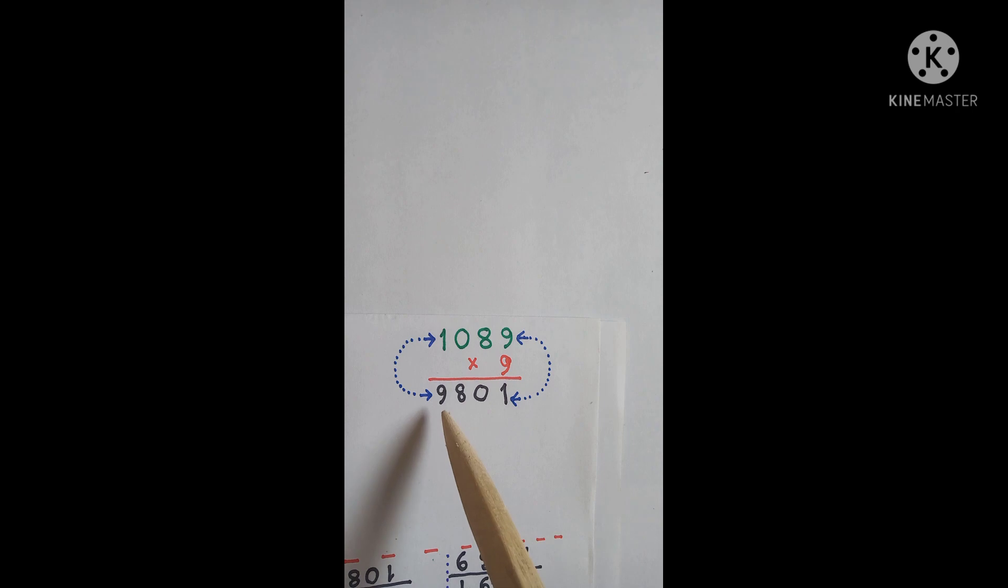1089 when reversed gives us 9801. Thank you for watching. Please like and share the channel Math1089. Don't forget to share. Thank you.